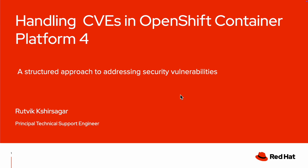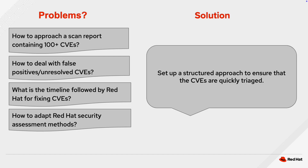In recent times, we have seen that cluster admins as well as security admins are struggling a lot while processing a huge number of CVEs. They often ask: how should we approach a scan report containing 100-plus CVEs? How to deal with false positives and real CVEs? Sometimes they see unresolved CVEs lingering for a longer period of time. What are the timelines followed by Red Hat for fixing important critical CVEs? Their DevOps teams and peers are relatively new to the cloud or OpenShift ecosystem, and they want to know how their team should remain on the same page while assessing security risk by following the right approaches and best practices shared by Red Hat.